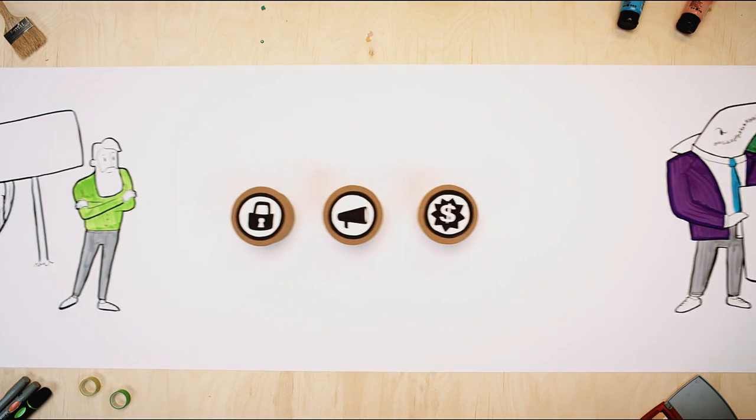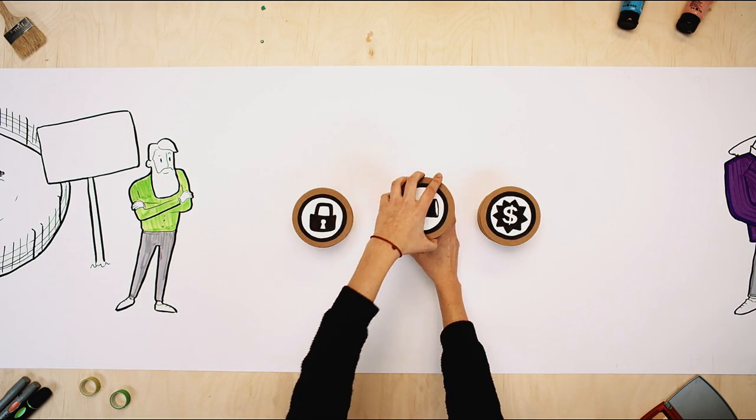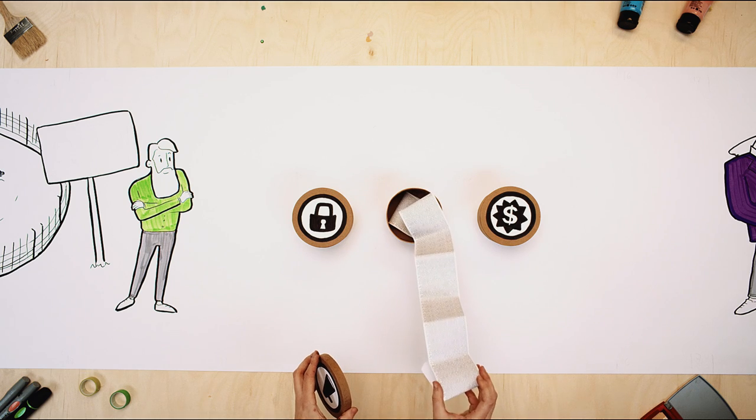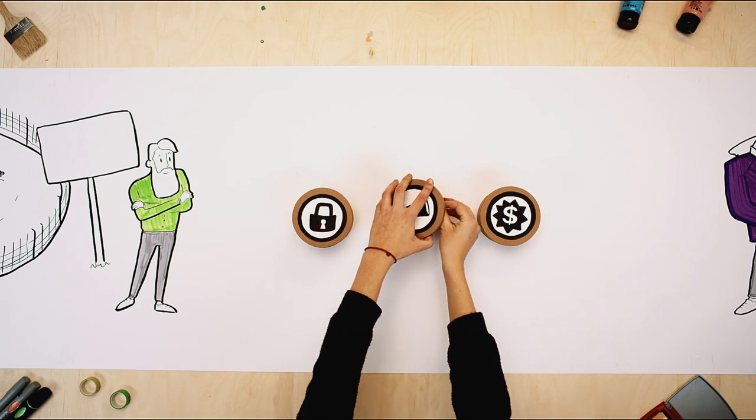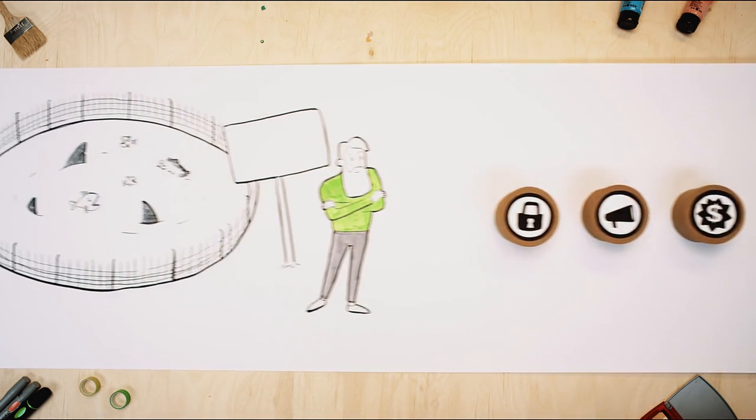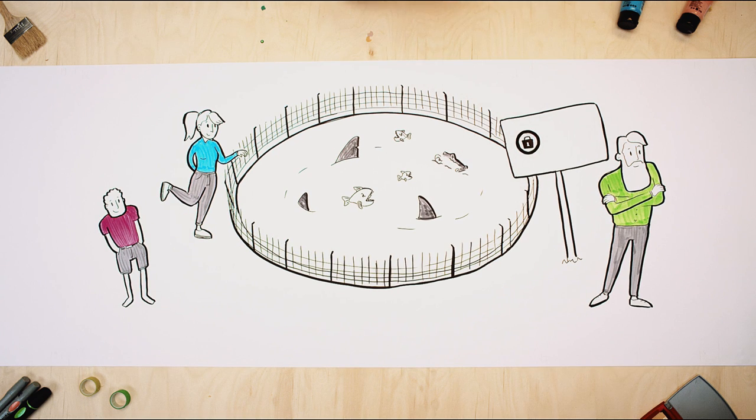In the future, there'll be standardized icons to better explain those complicated privacy terms which nobody reads. This means you'll know what you consent to and what your rights are if you tick a box to give away your personal data.